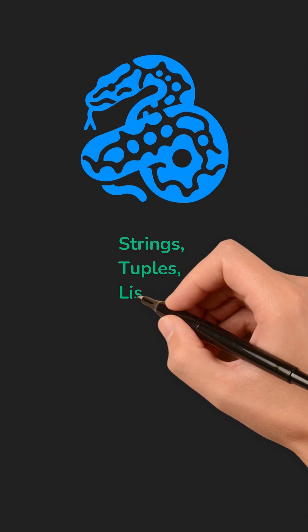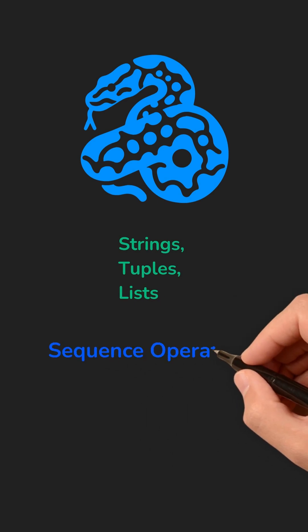In Python, strings, tuples, and lists are all sequences, which means they share a common set of powerful operations.